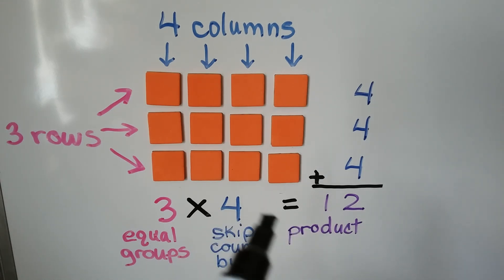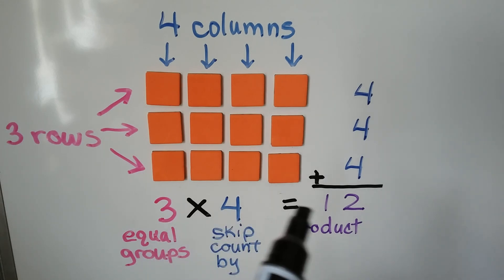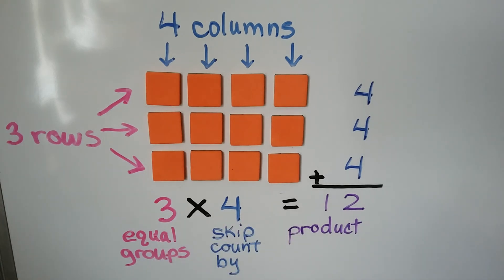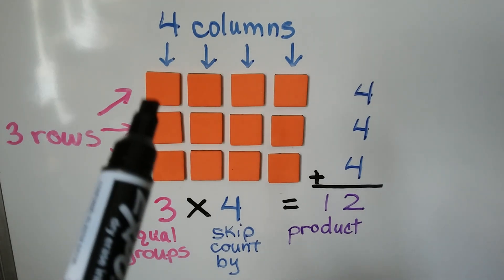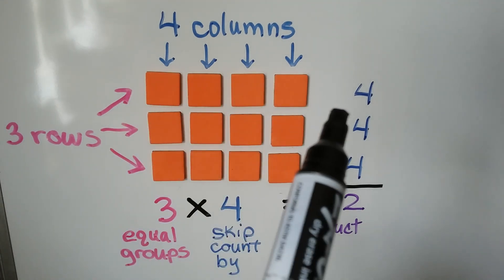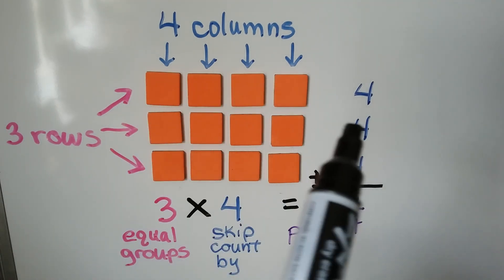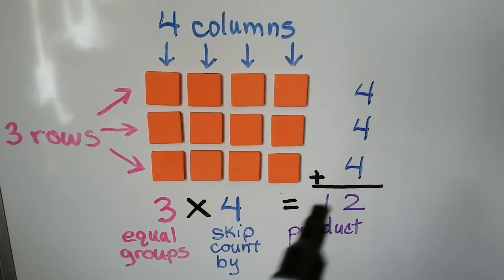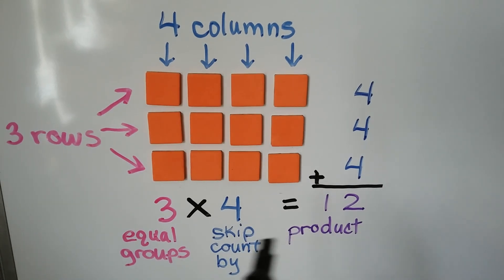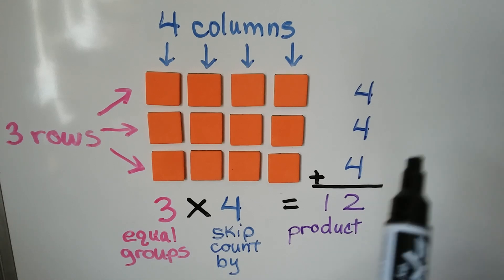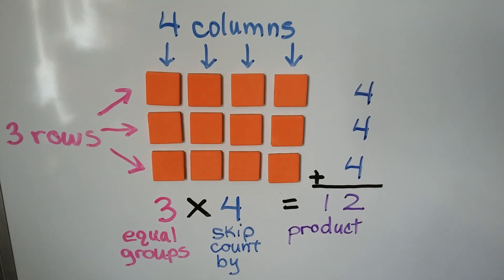Our product: 3 times 4 is equal to 12, that's our answer. We could do repeated addition of 4 plus 4 plus 4, which equals 12. Or we could skip count by fours: 4, 8, 12.